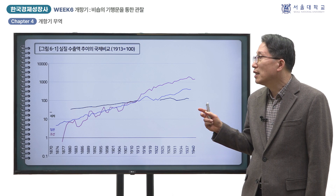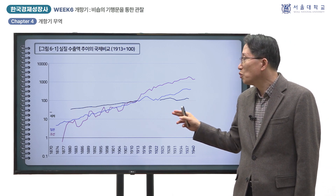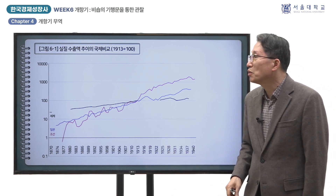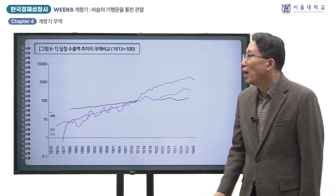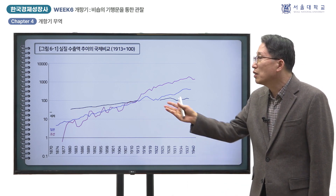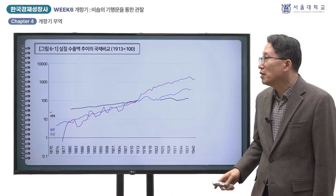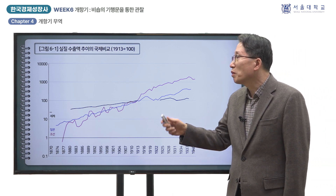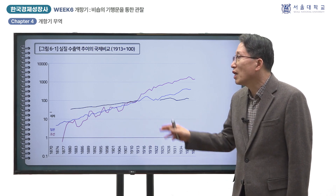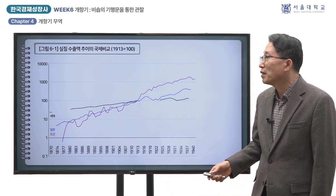그림 6-1은 이렇게 구한 조선의 수출을 일본 및 세계 평균의 추이와 비교한 것입니다. 1913년을 100으로 하는 지수를 로그 눈금으로 보인 것입니다. Y축의 눈금이 한 칸 높아지면 수출 규모가 10배씩 증가하는 것을 보여주며, 그래프의 기울기가 높을수록 증가율이 높은 것을 뜻합니다. 1870년 이후 제1차 세계대전 전인 1913년까지는 세계 무역이 꾸준히 증가한 시기였으며, 매디슨에 따르면 수출 증가율은 연평균 3.3%로 나옵니다.